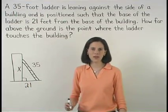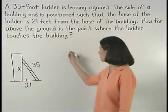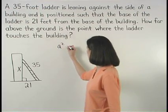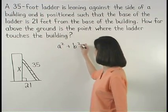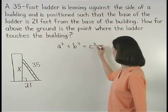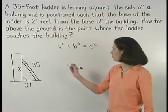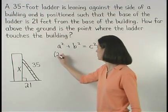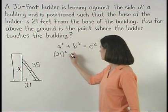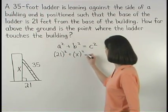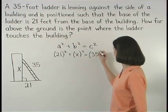So we can use the Pythagorean theorem. A squared plus b squared equals c squared. So we have 21 squared plus x squared equals 35 squared.